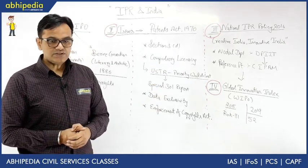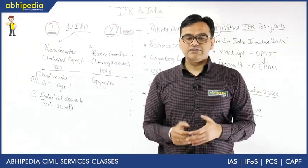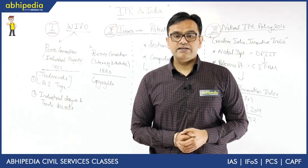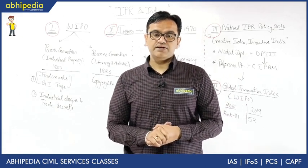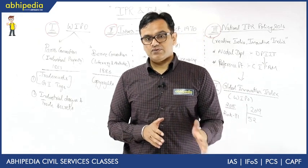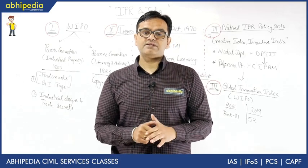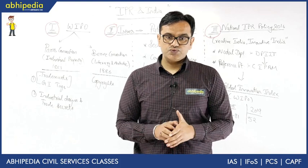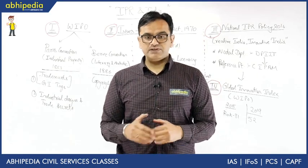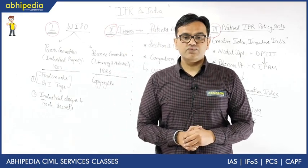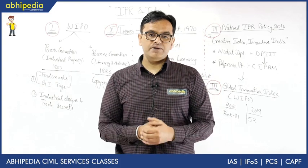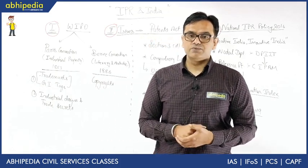Then there is compulsory licensing, which is allowed under the TRIPS agreement and within the Patents Act. The TRIPS agreement allows it in cases of national emergencies, extreme exigencies, or anti-competitive practices. Under a compulsory license, any private or public sector entity within your country can be given a license to import, sell, produce, or copy a patented product without informing the patent owner. Both Section 3D and compulsory licensing work against the interests of MNC monopolization and try to protect a market environment based on competition, diversity, and harmony.